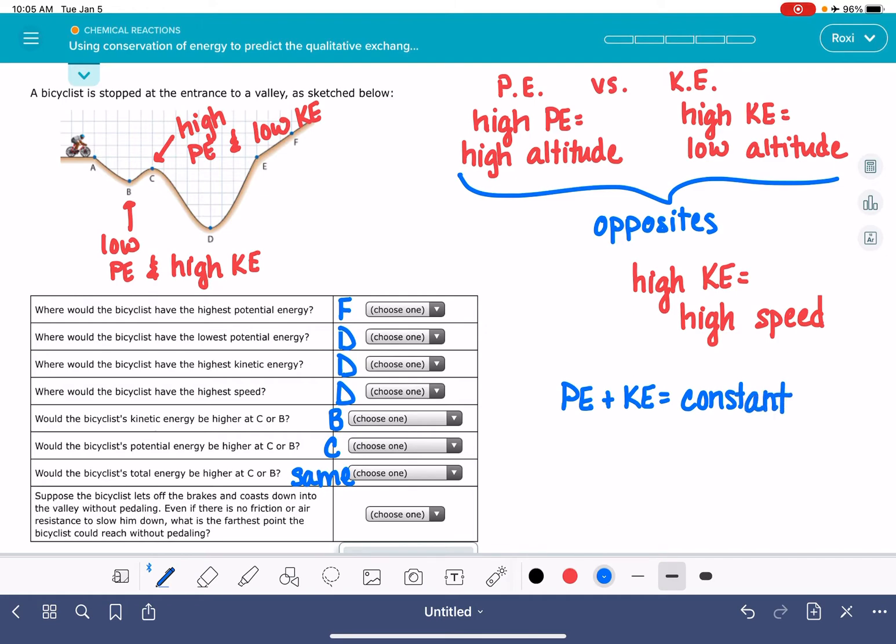So as this bicyclist moves through this path, the total energy is always maintained. The total energy of the bicyclist is always the same at point A, at point B, at point C. The total energy is always exactly the same.